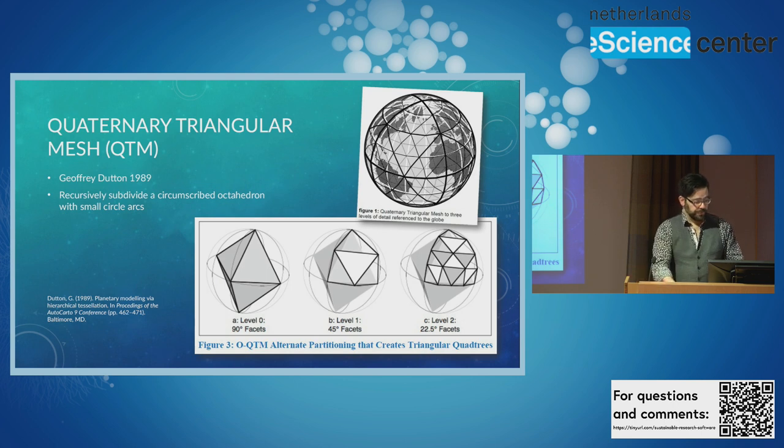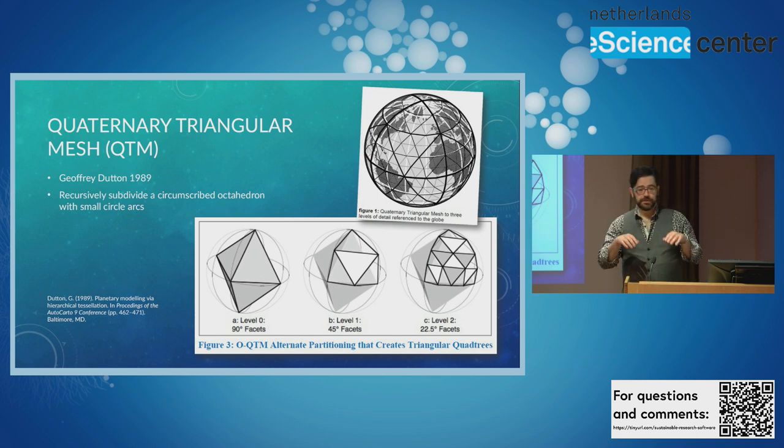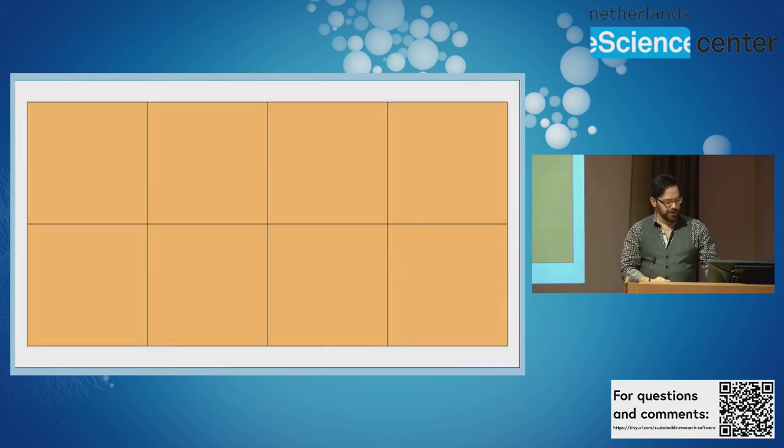So octahedron divide, divide, keep going. So you divide these shapes and you project their edges because remember the earth is round. These shapes are flat. So once you have them, they're inside or secant inside the earth. So you have to project them out up onto the surface, but you do that every time and you're off to the races.